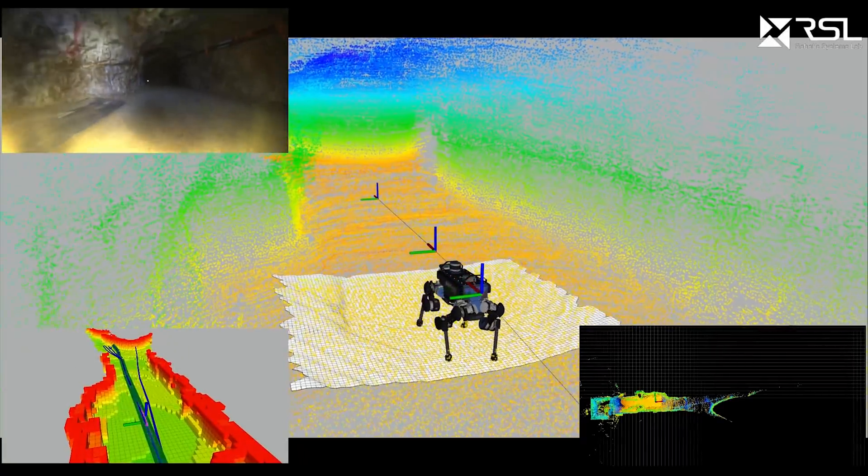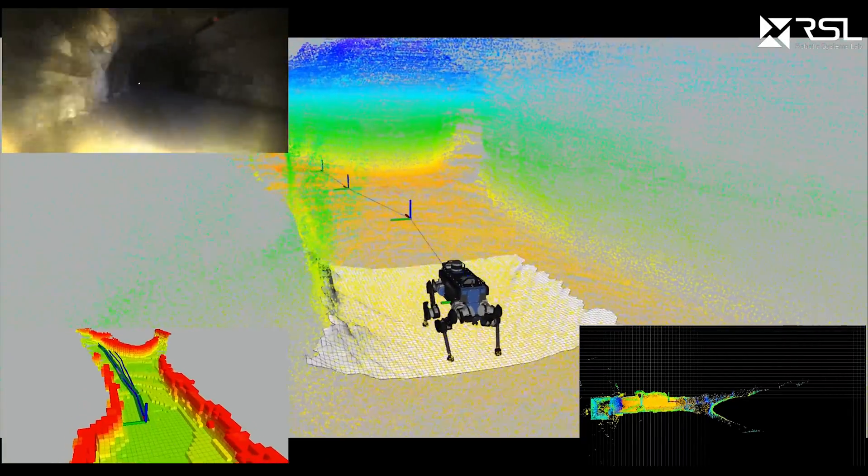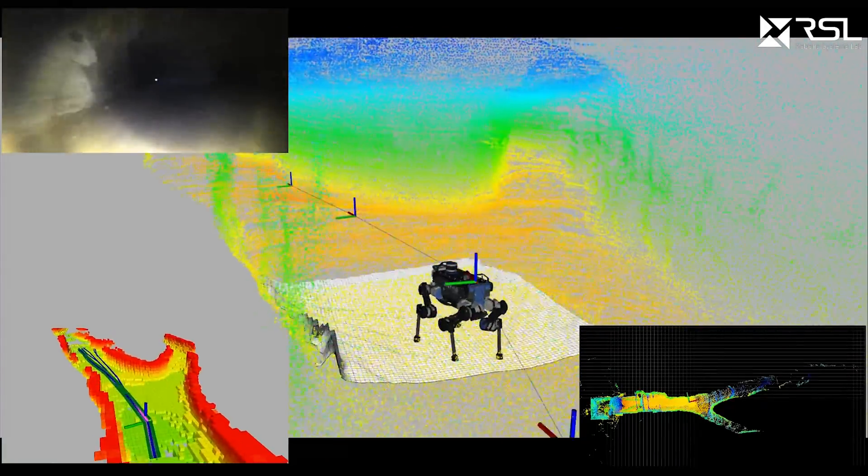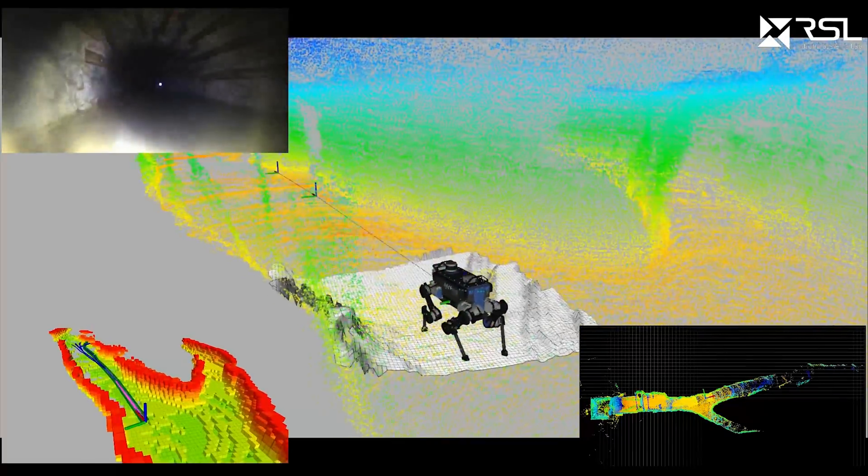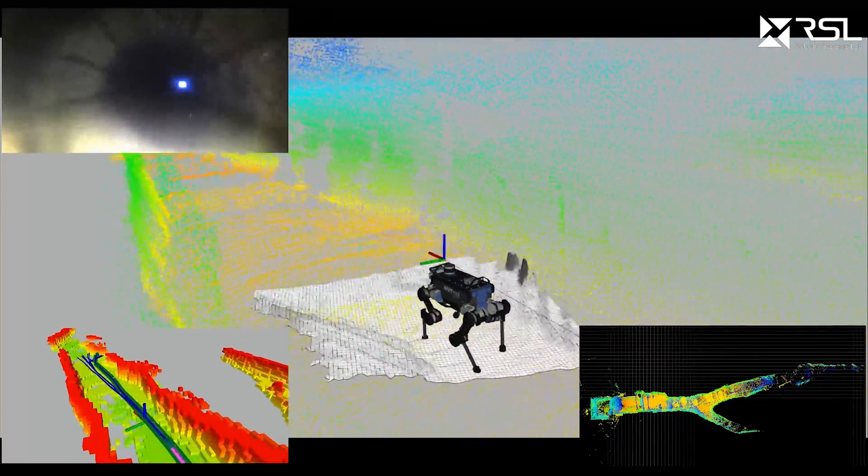Aerial scouts and collision-tolerant aerial robots facilitate fast access and exploration of underground settings, while legged robots enable their long-term exploration, despite the often dynamic and rough terrain involved.